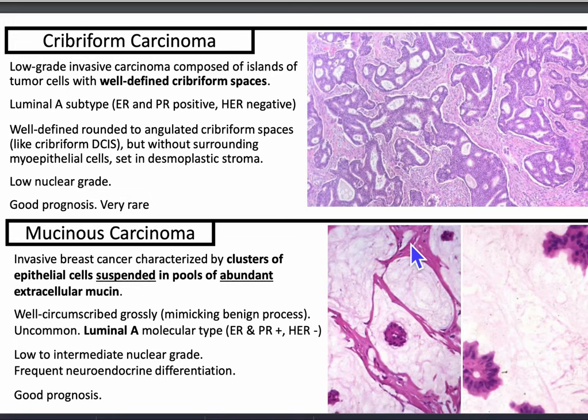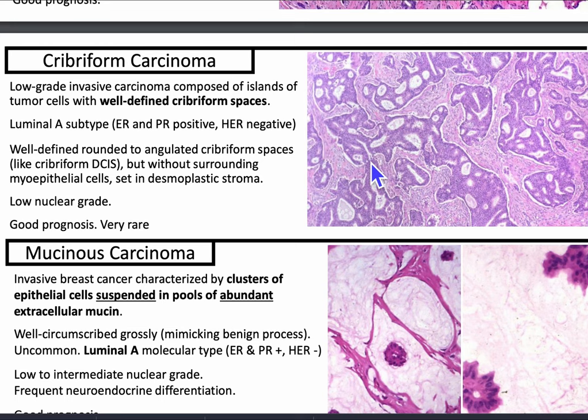Another one with a relatively good prognosis is cribriform carcinoma — a low-grade invasive carcinoma composed of islands of tumor cells with well-defined cheese-hole or cribriform spaces. It's luminal A subtype, ER and PR positive, HER2 negative, with well-defined rounded to angular cribriform spaces — like cribriform DCIS but without surrounding myoepithelial cells — set in a desmoplastic stroma. It has low nuclear grade and is very rare.